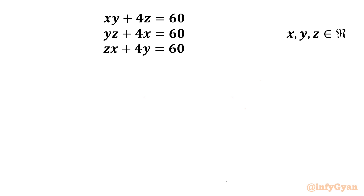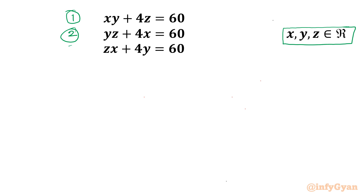Welcome back to InfiGyaan my dear friends. Today in this video we are going to take up one very interesting and challenging question from Math Olympiads on system of equations. The given equations are: xy plus 4z equals 60, yz plus 4x equals 60, and zx plus 4y equals 60. We have to find out all real solutions. Let's get started by considering equation 1, equation 2, and equation 3.